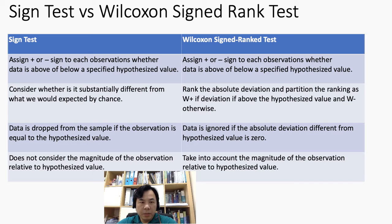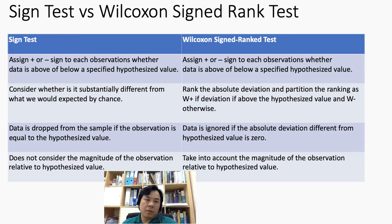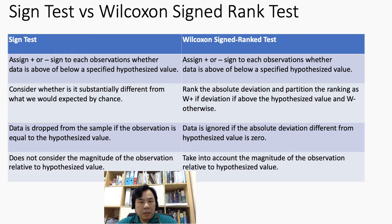For the sign test, once we have assigned plus or minus signs, we count how many data points are above the hypothesized value and how many are below. By knowing the number of positive values above the hypothesized value, we check whether it is substantially different from what we would expect by chance. The number of observations above and below the hypothesized value must be substantially significant for us to consider a good test result.